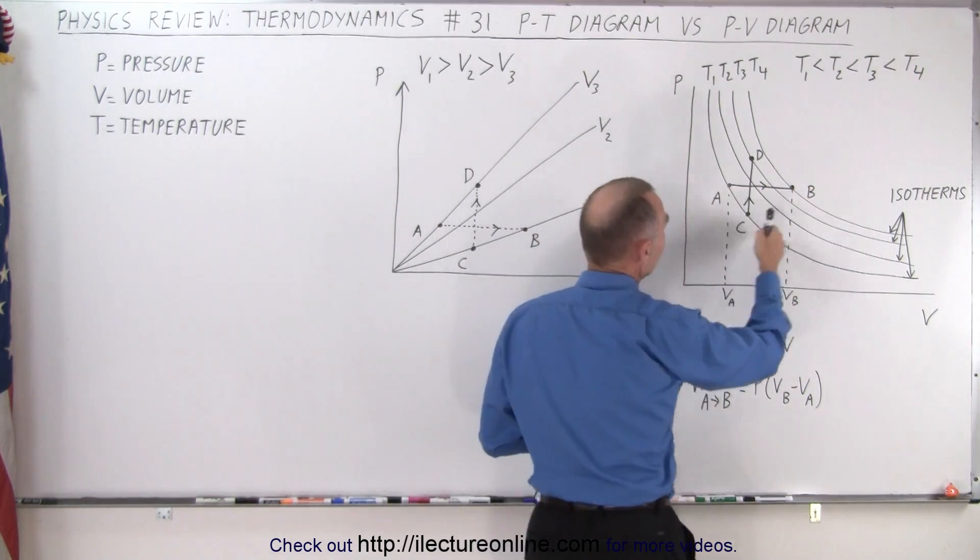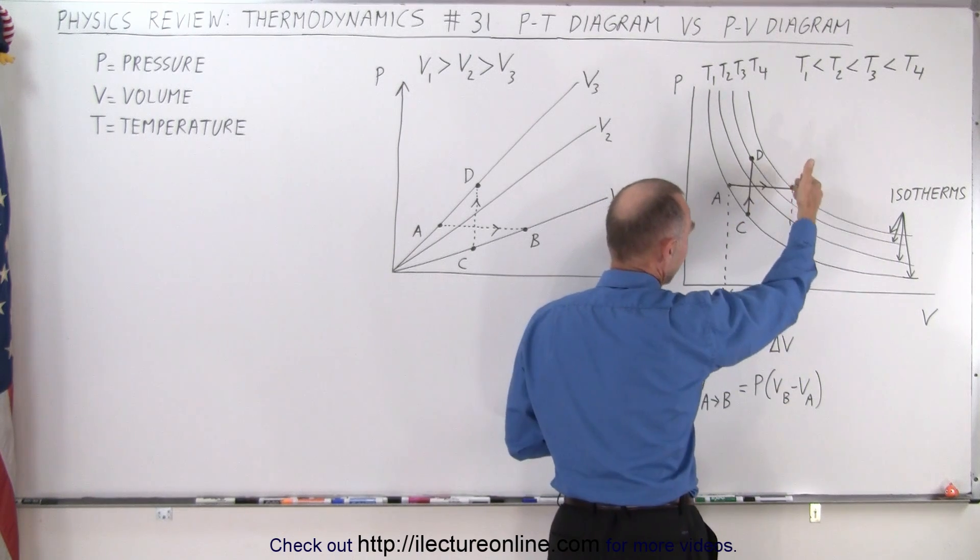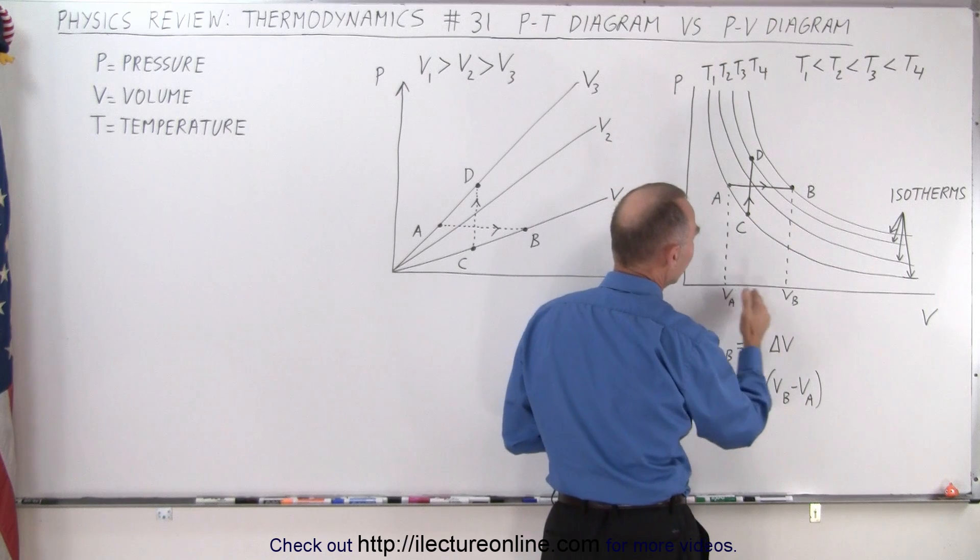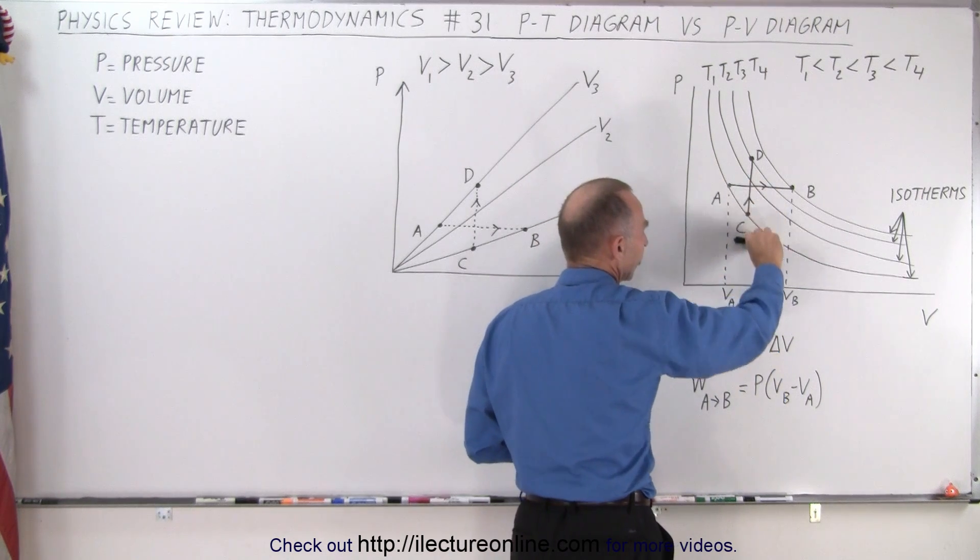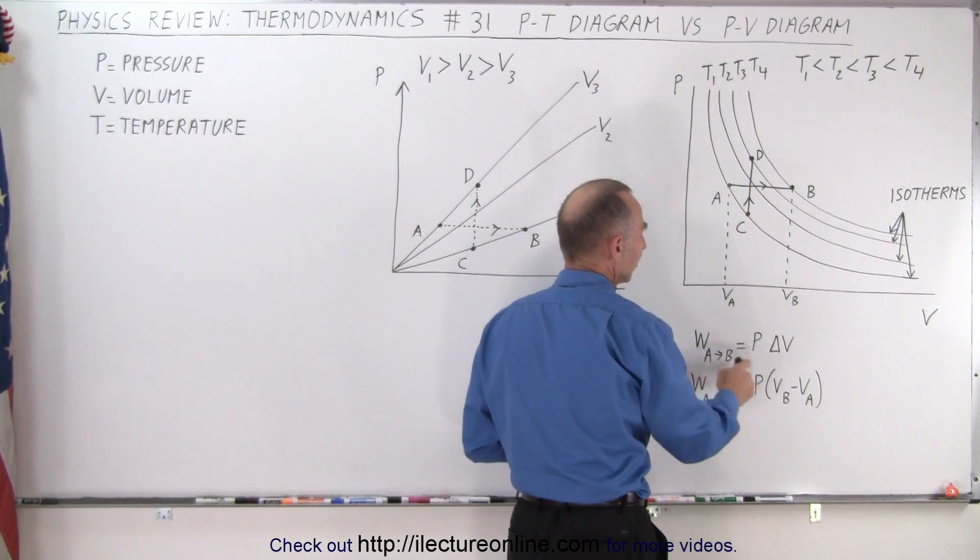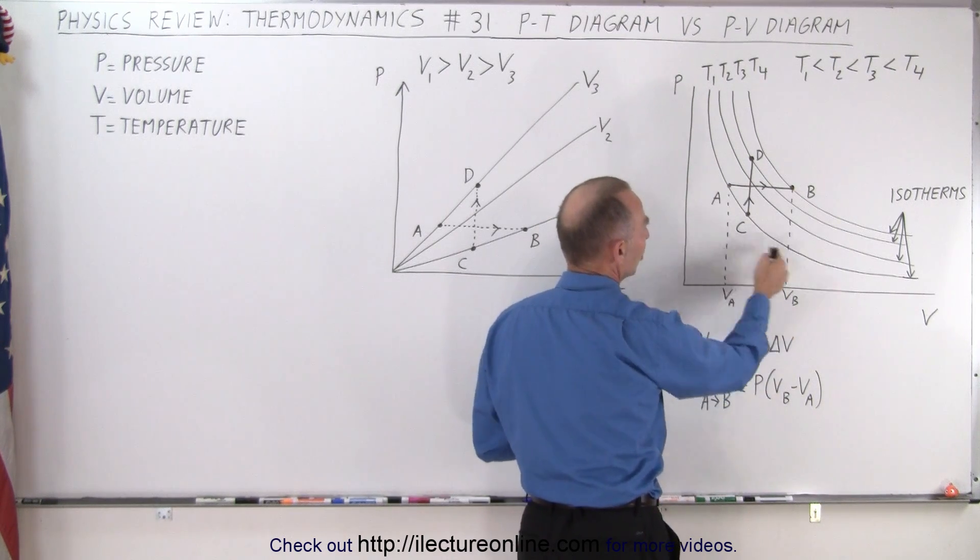But the temperature has increased because now we're on a different isotherm where the temperature is represented as a higher temperature, and we also have an increase in volume. Notice that the area underneath this curve represents the work done, which is simply the pressure from A to B, which is constant, times the change in volume.